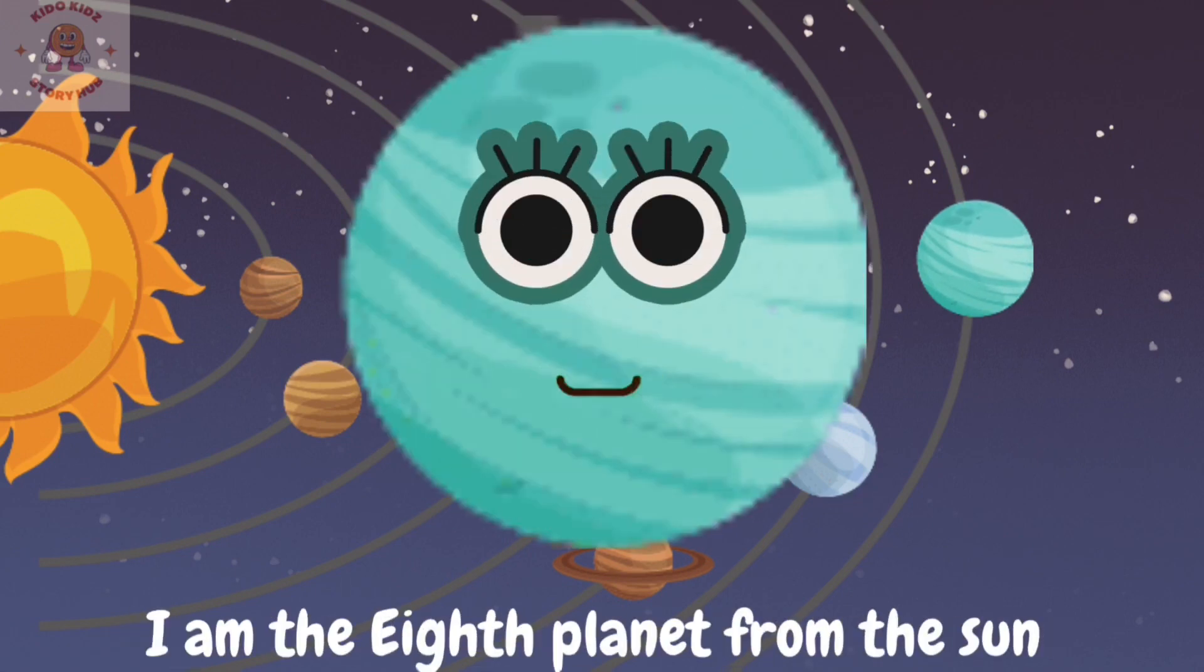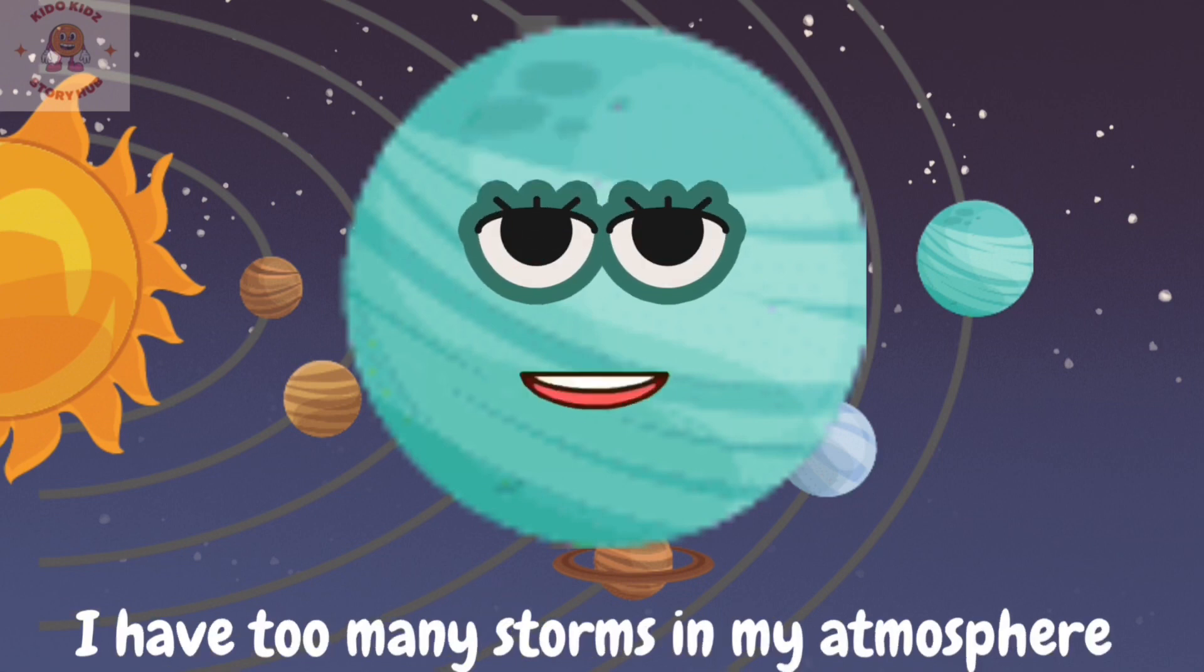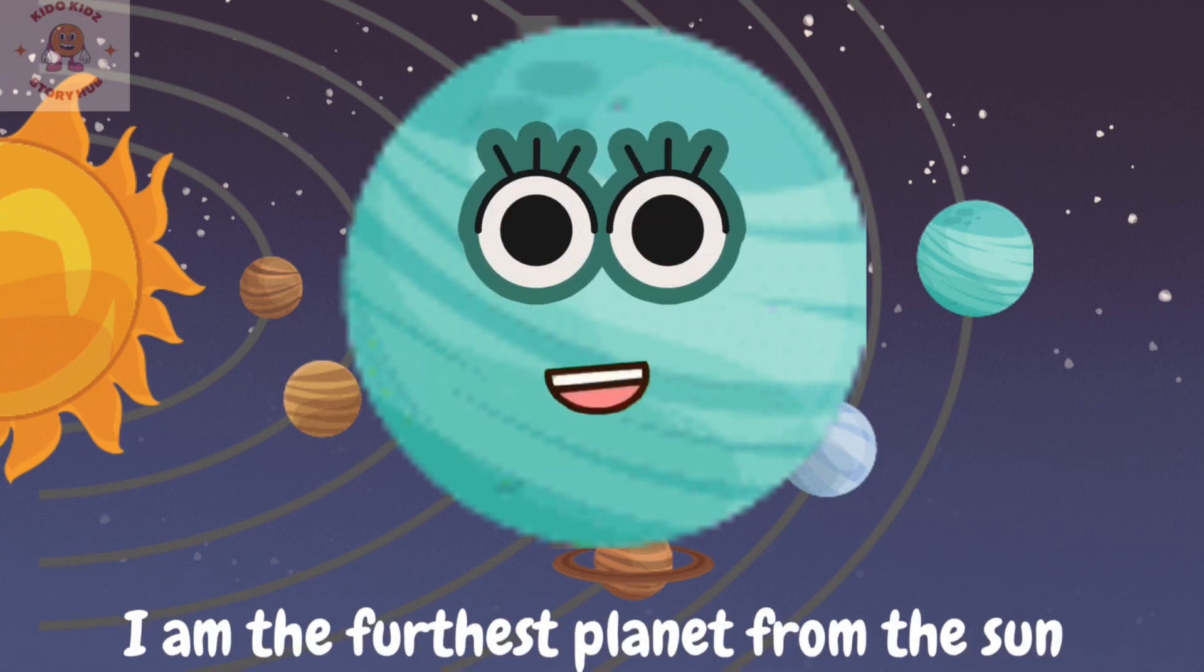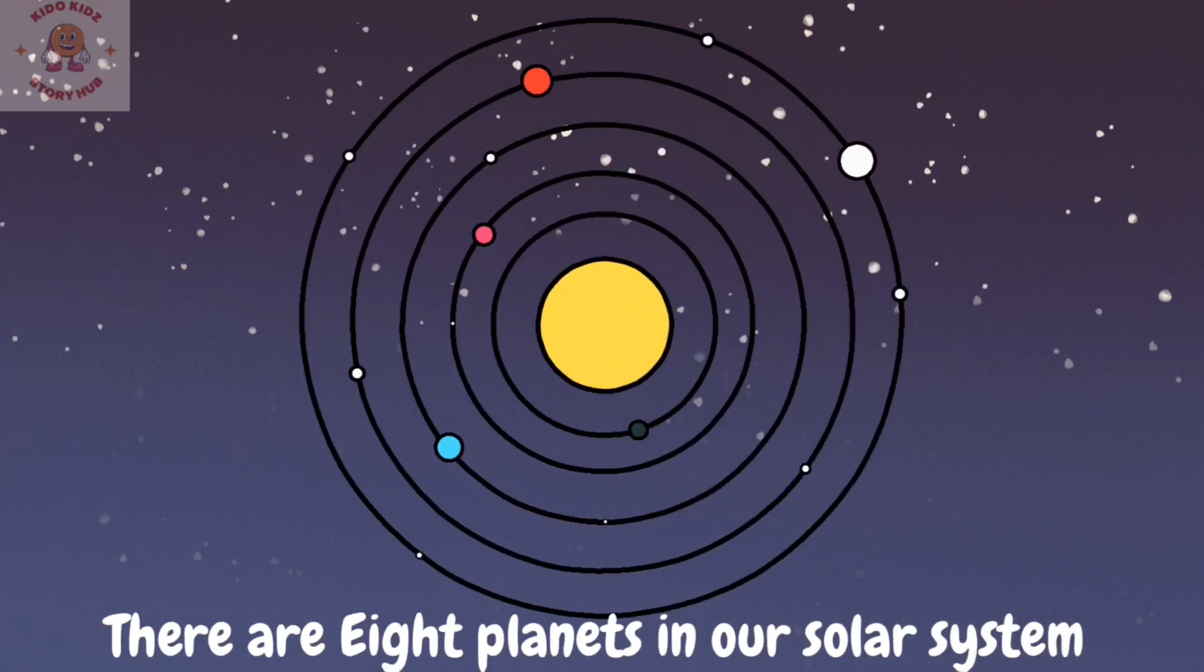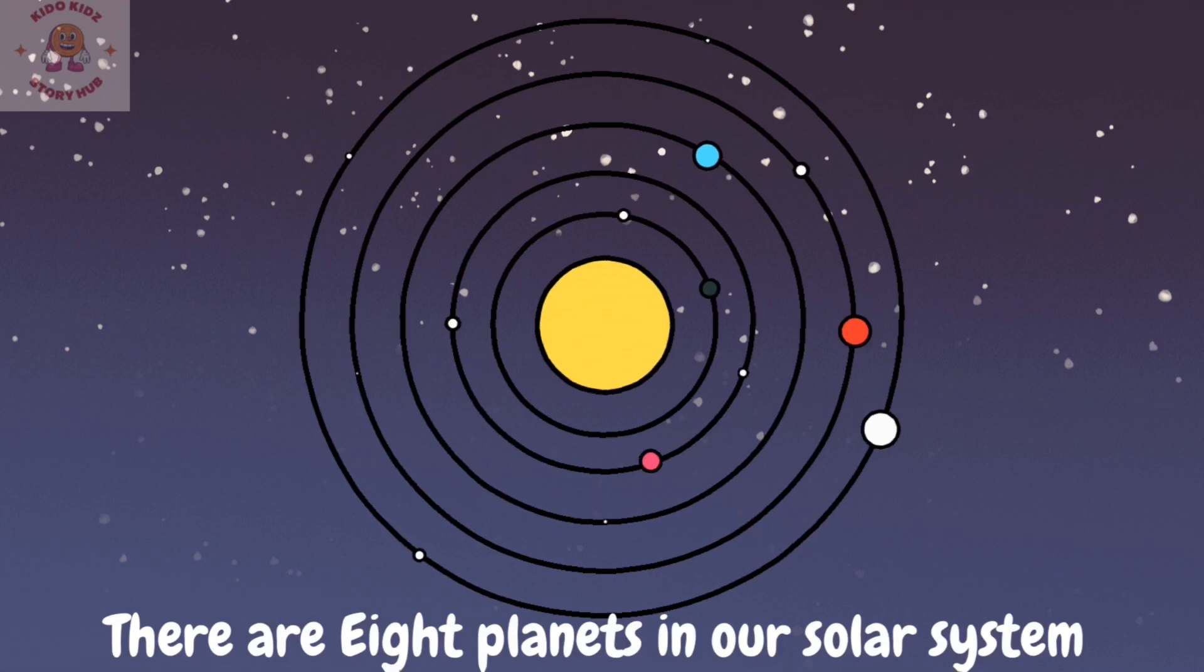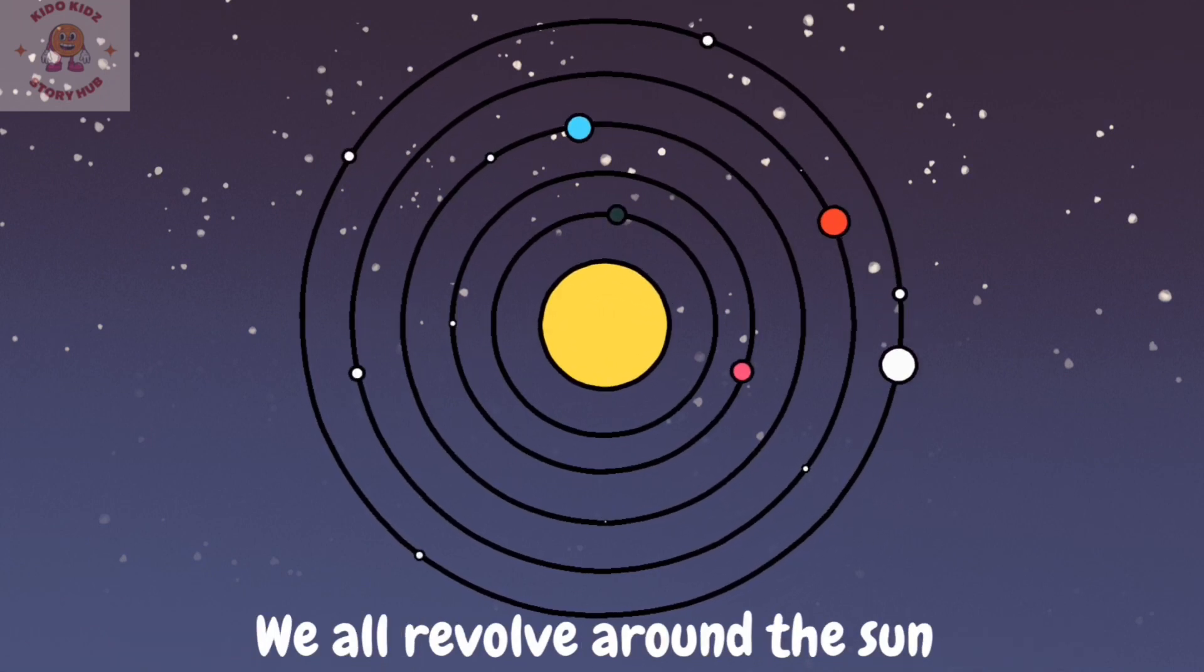Hi, my name is Neptune. I am clear in color. I am the eighth planet from the sun. I have too many storms in my atmosphere. I am the furthest planet from the sun. There are eight planets in our solar system. We all revolve around the sun.